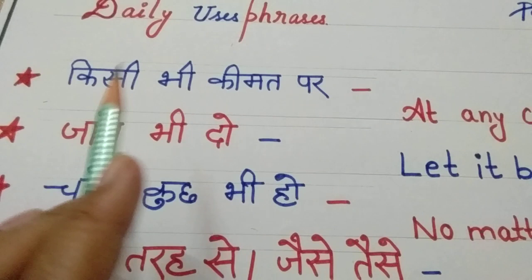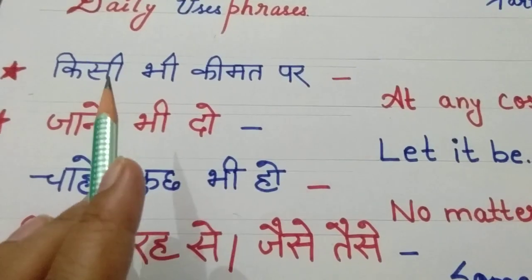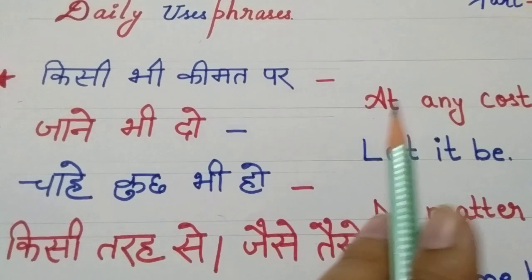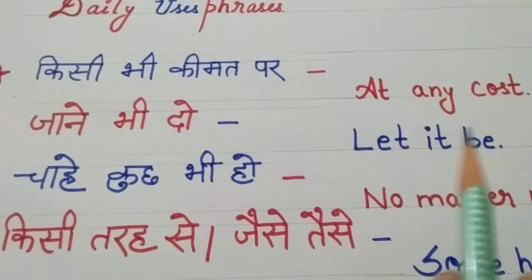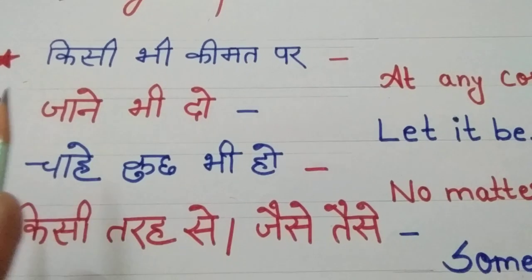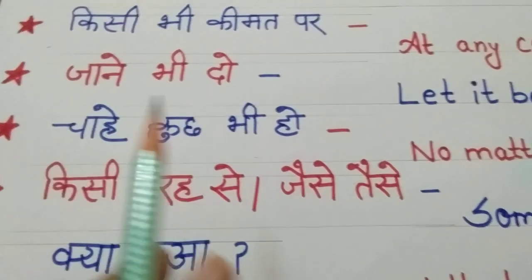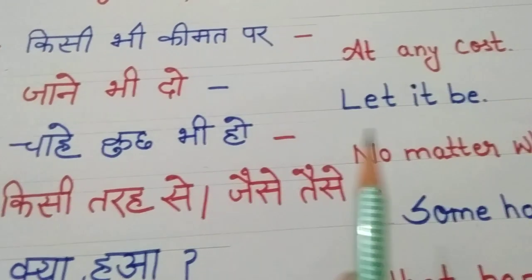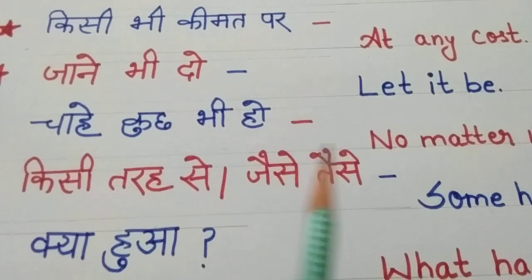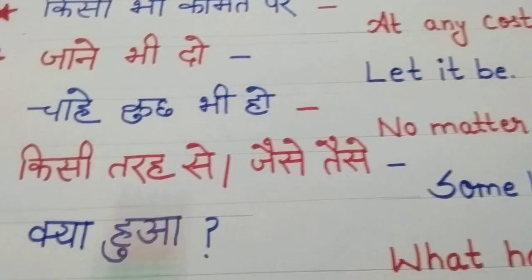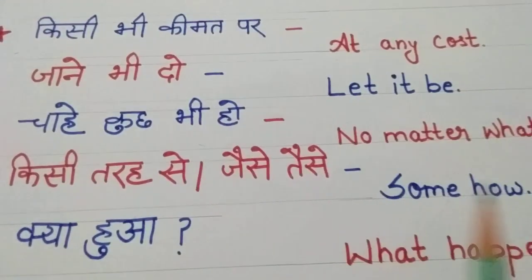Now we start. किसी भी कीमत पर — at any cost. जाने भी दो — let it be. चाहे कुछ भी हो — no matter what. किसी तरह से, जैसे तैसे — somehow.